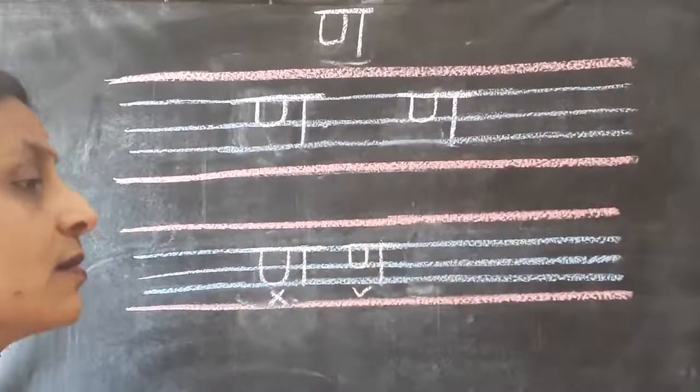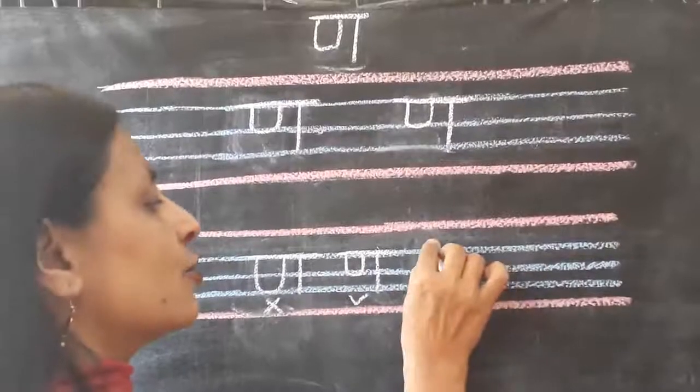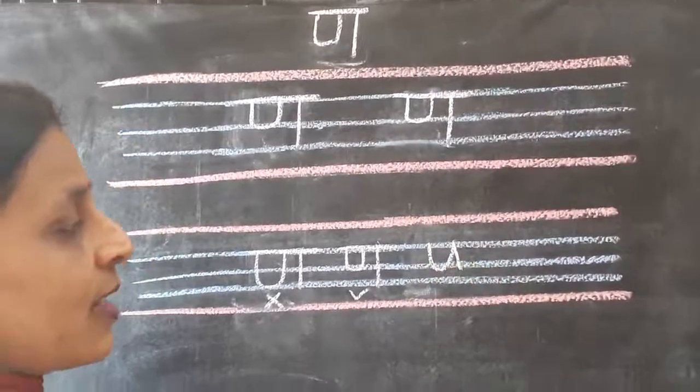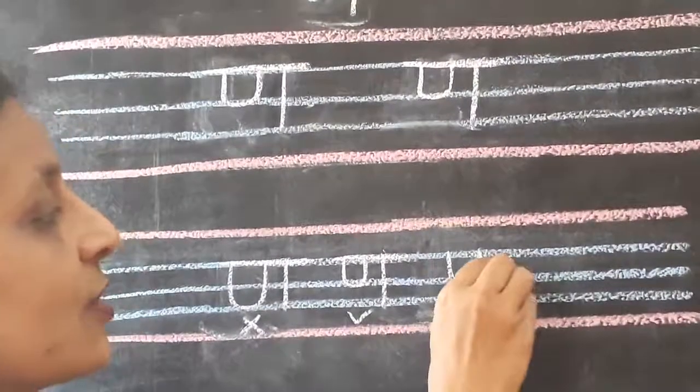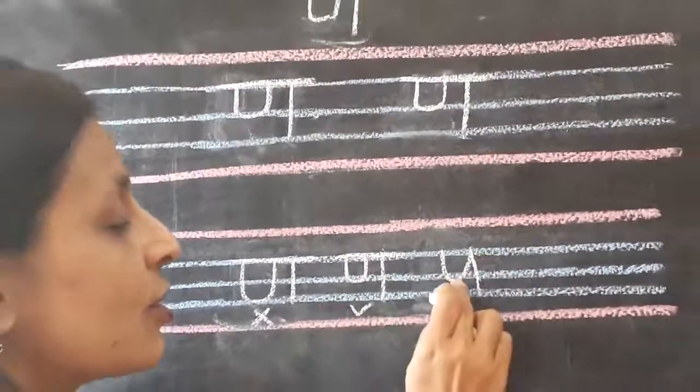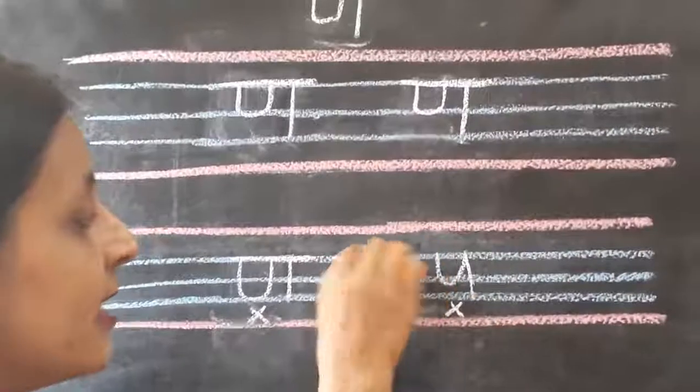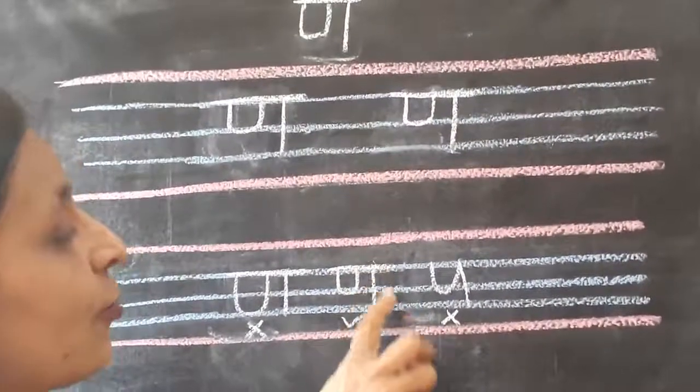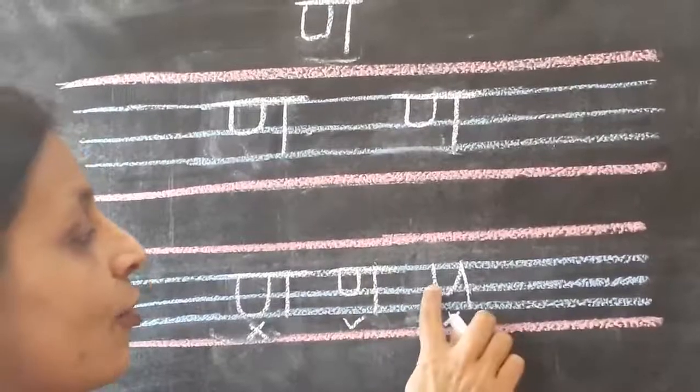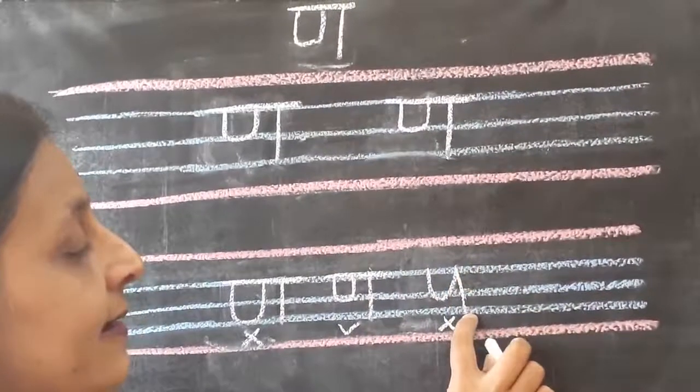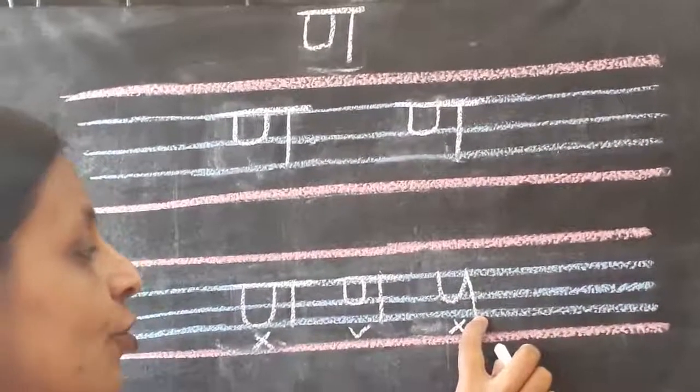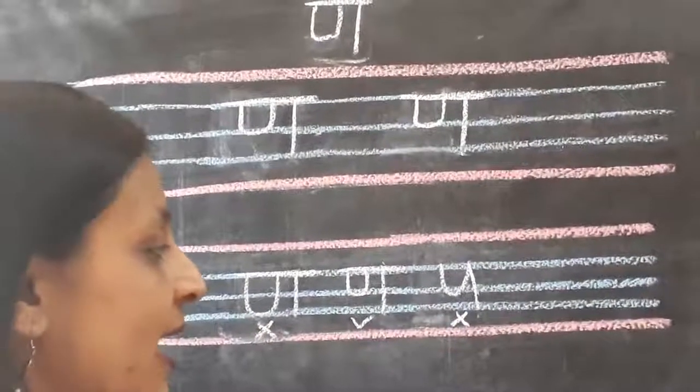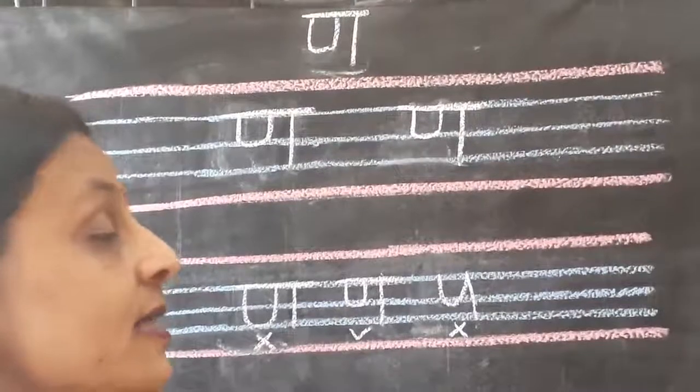Now I have seen some children can write this way also. Is this correct? You tell me. This is also wrong. This also we are going to leave this line here and then beside that we are going to draw a standing line. We are not going to join the standing line like this. Understood?